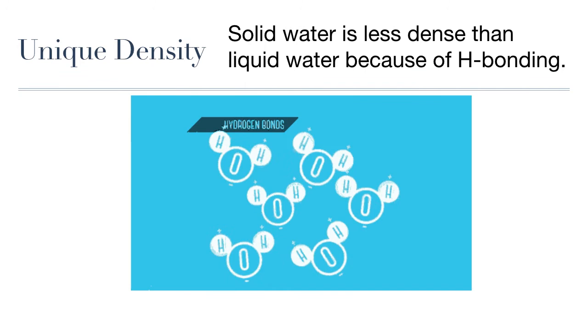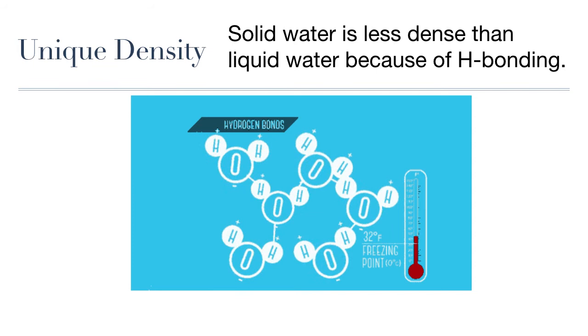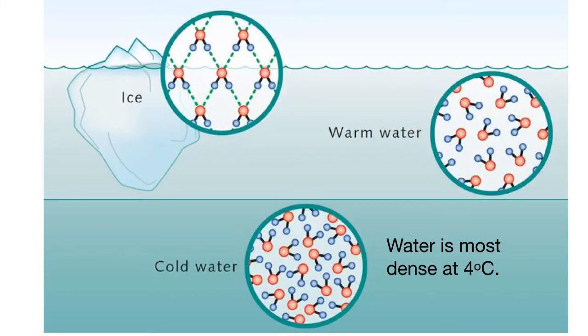In liquid water, the hydrogen bonds break and reform as the water molecules move around. Once the ice forms, the hydrogen bonds are more stable and stay in place, which then cause the molecules to spread out a bit more and take up more space than they did in a liquid.